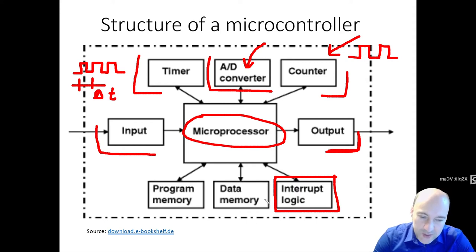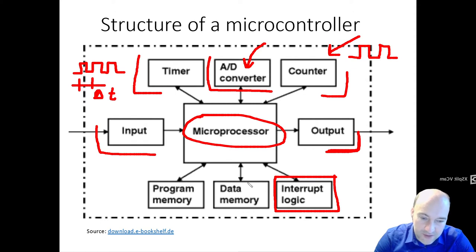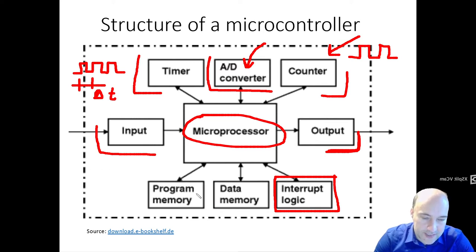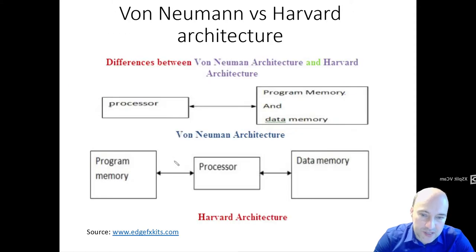Two remaining blocks in our block diagram are the program memory and the data memory. This is typical for embedded microcontrollers: you have a specific memory space where you store your code, and another space where you save your data. There are effectively two architectures — which we will see on the next slide — where the memory space can be combined or separated.